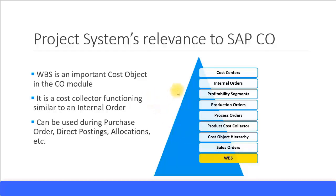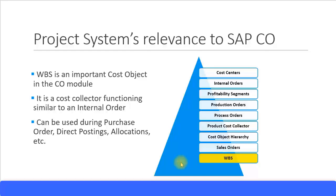WBS is an important part of the CO module because it acts as a cost object. It acts like a cost collector similar to all other cost objects, and in terms of operational functionality it is more similar to the internal order. Companies typically use internal orders for short-term projects and WBS for long-term projects. WBS can be used for purchase orders as an account assignment object, posted to directly as a real object, and used in allocations — very similar to what an internal order does.